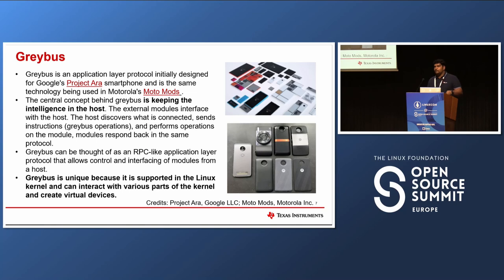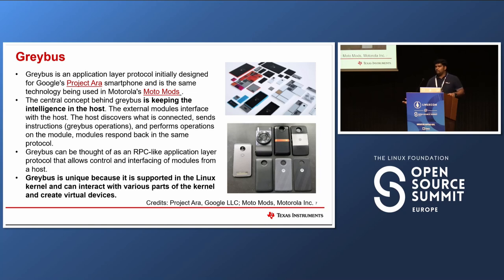Greybus is unique because it has strong roots within multiple Linux kernel subsystems and can create virtual devices in the Linux kernel. If you plug in a camera to a Project Ara phone, you will have a virtual camera node that appears on your host processor, and you use the device as if it was actually on the host. When you perform operations on these virtual devices or controllers, those operations are converted to Greybus operations and sent to the modules, which then perform the necessary actions.